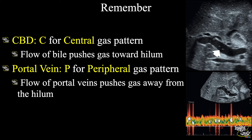A very easy technique to remember: in case of pneumobilia, the flow of bile pushes the gas towards the hilum — so remember C for CBD, C for central gas pattern. In case of portal vein, the flow pushes gas away from the hilum — so P for portal vein, P for peripheral gas pattern.